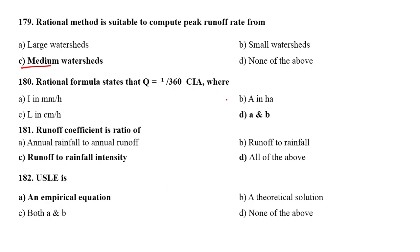I is rainfall intensity and A is the area in hectares. Runoff coefficient is a ratio of runoff to rainfall intensity.